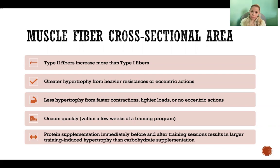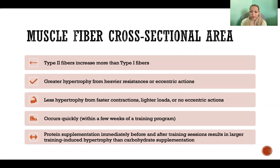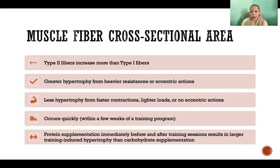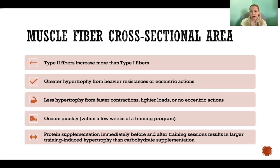Other benefits for sure, but less hypertrophy. The hypertrophy occurs quickly — within a few weeks of beginning a training program, there starts to be a pretty substantial amount of hypertrophy. Protein supplementation immediately before and after training sessions results in larger training-induced hypertrophy than carbohydrate supplementation. When we compare carbohydrate versus protein supplementation before and/or after a strength training session, protein far exceeds the benefits in terms of strength gains and hypertrophy compared to carbohydrates.